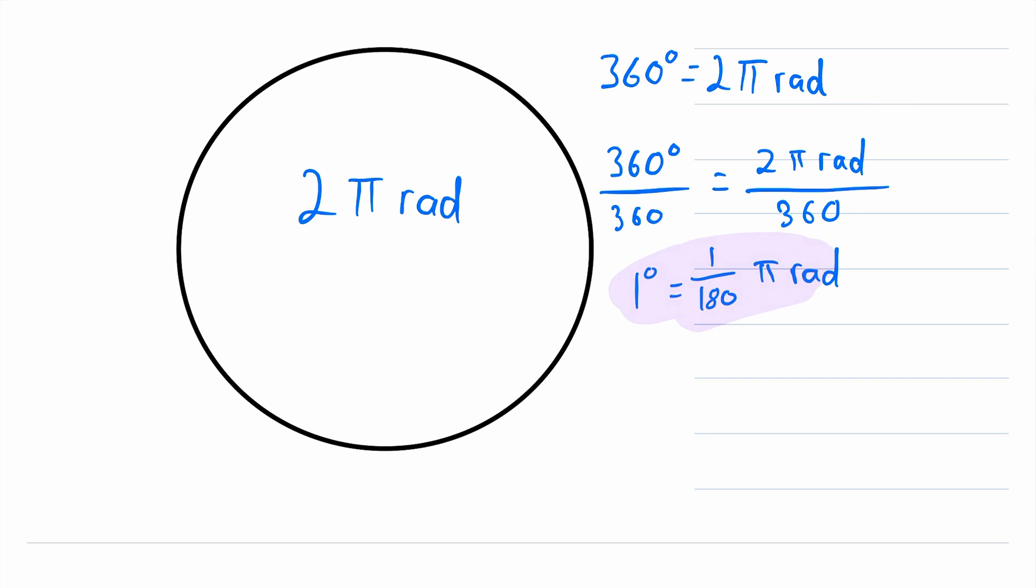And there you go, this is your degree to radians conversion. Whatever number of degrees you have that you want to convert to radians, just multiply it by one over 180 pi, and that is the number of radians.